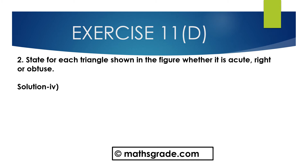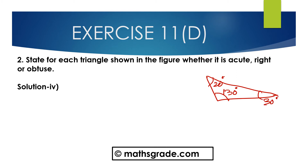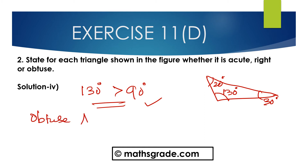Now question number 4. First draw the given triangle. This is 130 degrees, this is 20 degrees, and this is 30 degrees. In this triangle, one of the angles is 130 degrees, which is more than 90 degrees. We know any triangle whose one angle is more than 90 degrees, that triangle is said to be an obtuse angle triangle. So this is an obtuse angle triangle.